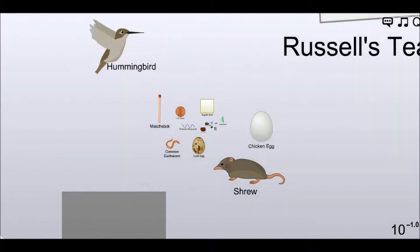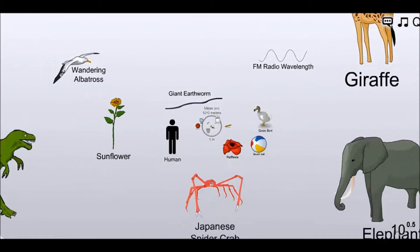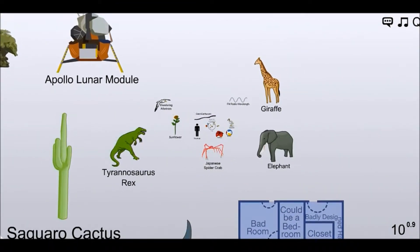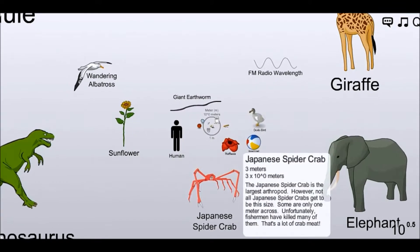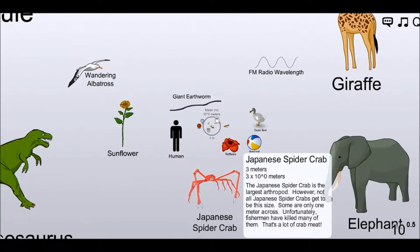We can go right and go really big, which I wanted to point this out right here. A Japanese spider crab is almost as big as, if not bigger than a human. That is terrifying.